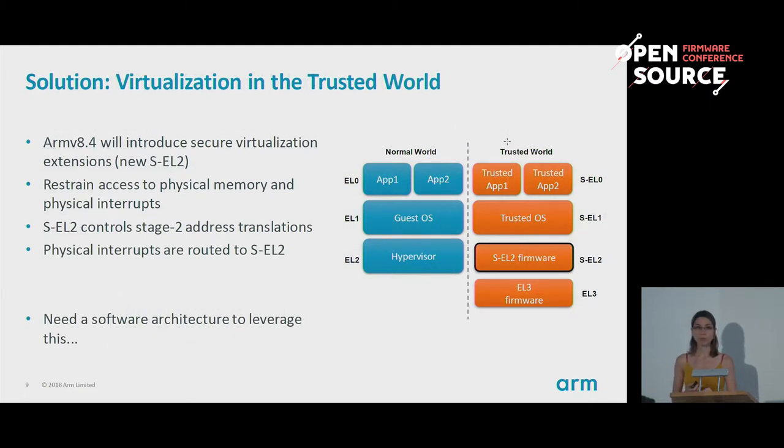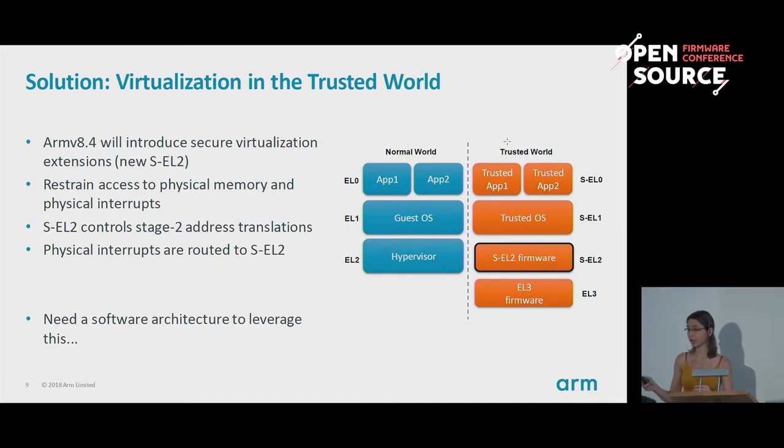The solution ARM proposes is to introduce virtualization in the trusted world. There's a new version of the architecture coming — ARMv8.4 — which will give us secure virtualization extensions with a new exception level: Secure EL2. That will allow firmware code to run at this exception level, very similar to EL2 in the normal world where a hypervisor runs. The Secure EL2 firmware will be able to restrain access to physical memory for trusted OSes, which will no longer access physical memory directly.